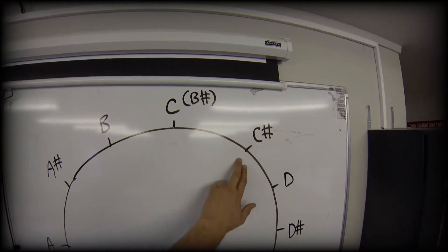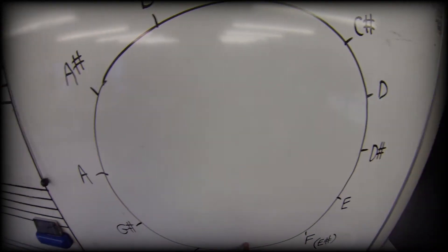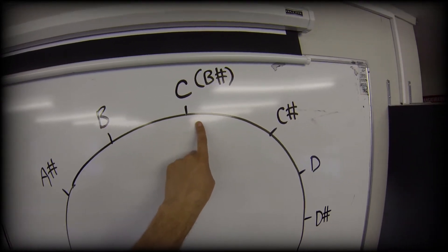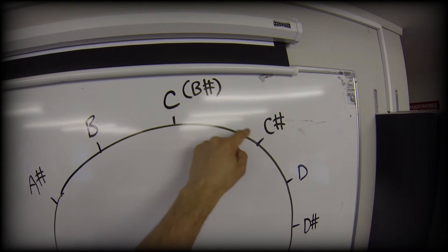So now we're going to add the flats, which are our alternative names for these halfway notes. So just like we can sharpen a C, which means we go in a clockwise direction from the C one step, we can flatten a D.